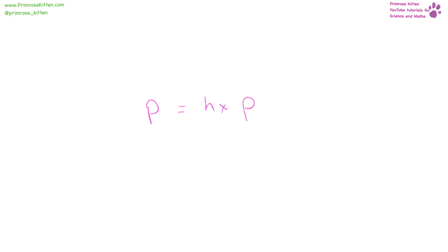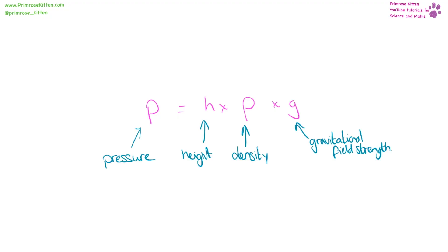Pressure equals height times density times gravitational field strength. Pressure is measured in Pascals, height in metres, density in kilograms per metre cubed, and gravitational field strength is 9.8 Newtons per kilogram.